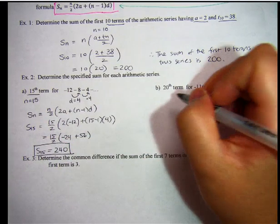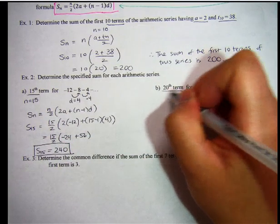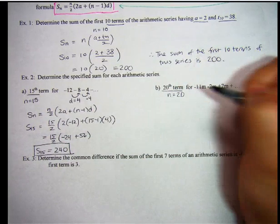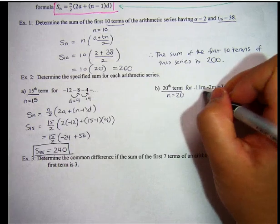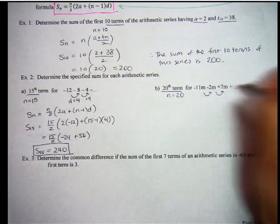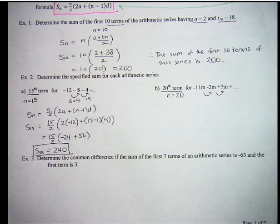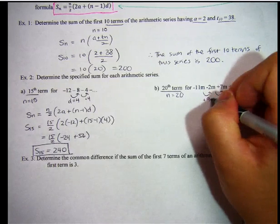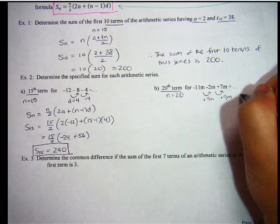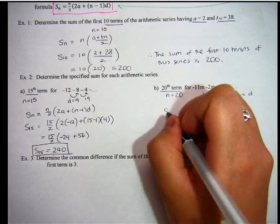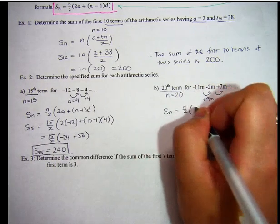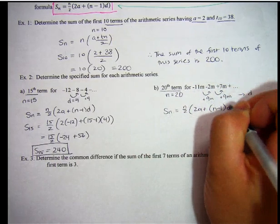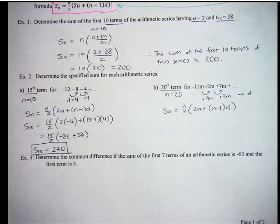All right, second example. N equals 20. We keep adding 9M's, so that would be our common difference D. So SN equals N over 2, 2A plus N minus 1 D. So pause the video, try it on your own, come back for the full solution.